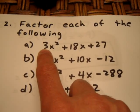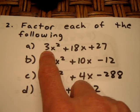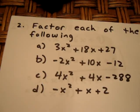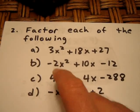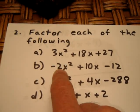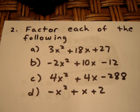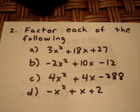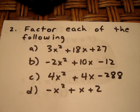The sum and product method that we learned earlier works when the leading coefficient is one. Well, what we need to do here in each of these cases is to try to common factor out that coefficient, and hopefully it will common factor out of every term in each case, and then we'll be able to use the sum and product method.